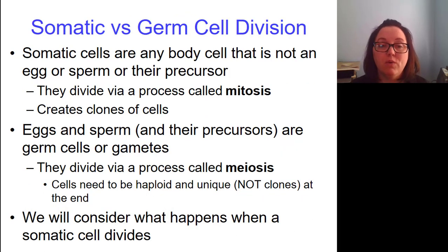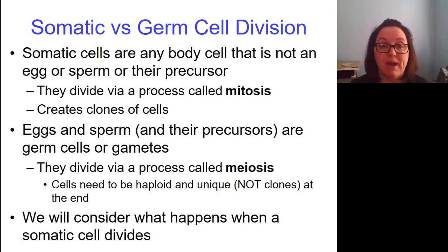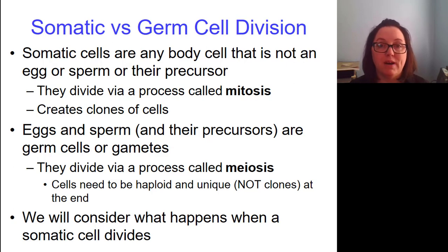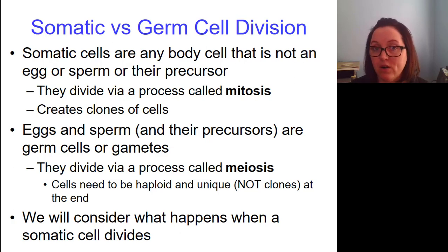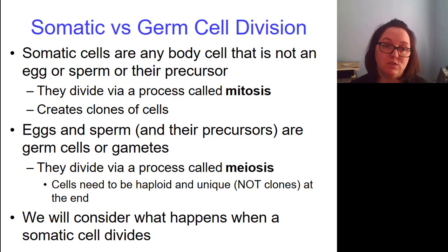I want to talk about somatic cells versus germ cells. Almost all the cells in your body are somatic cells — somatic means body cells. The only cells in your body that are germ cells are the cells that are destined to become, or already are, gametes: eggs and sperm.